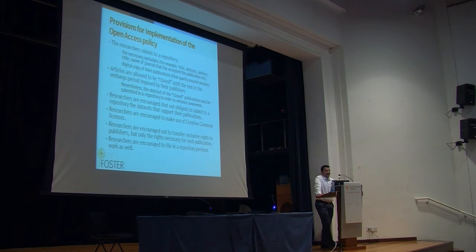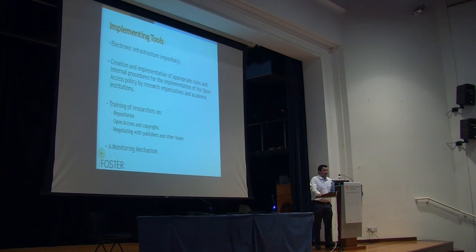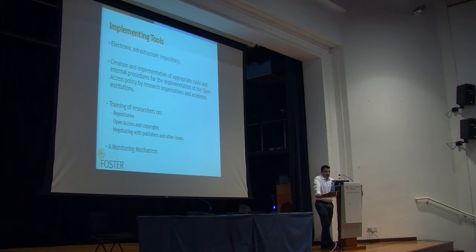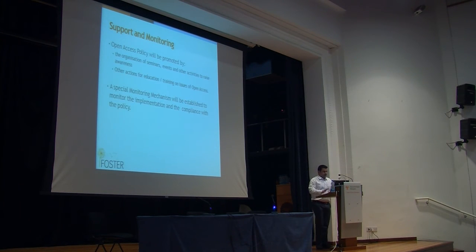Researchers are also encouraged to file previous work in a repository as well. The implementation tools include, of course, a repository, and the creation of appropriate rules and internal procedures for the implementation of the Open Access policy by research organizations and academic institutions. We will set the overall national policy and academic institutions will have their own policies based on the national one. There will also be training for researchers on repository use, Open Access, copyrights, and negotiating with publishers. A monitoring mechanism should be implemented so that we can follow the strategy.